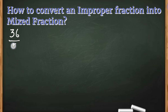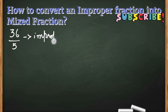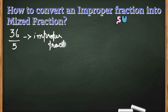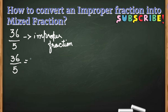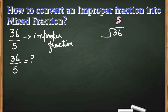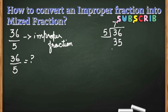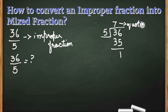Let us take another example: 36 by 5. Again, this is an improper fraction. To convert this into a mixed fraction, we will use the division method. We can also convert a mixed fraction into an improper fraction — to learn that you can see the other videos on my channel. Now let us divide 36 by the denominator 5.